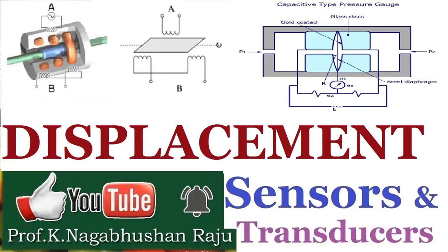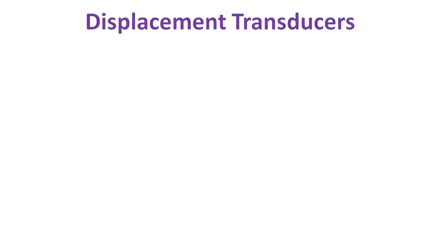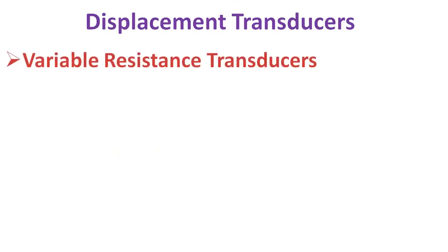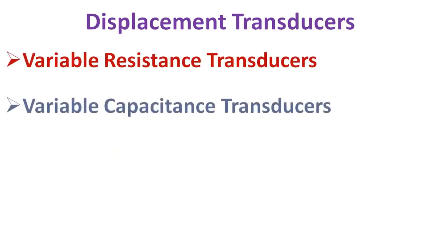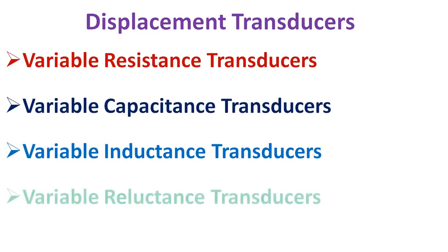Hi friends, welcome back to our series of sessions on sensors and transducers. Today we shall be discussing displacement transducers, which can be classified based on their resistance — change in variable resistance, variable capacitance, variable inductance, and variable reluctance type transducers. Let's understand one by one.